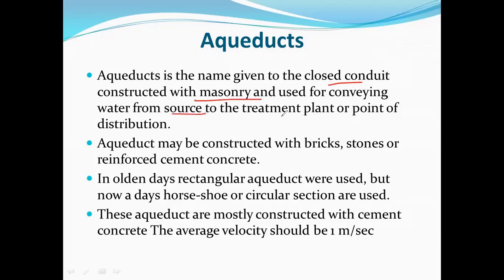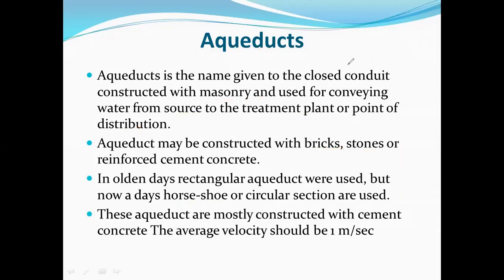This aqueduct may be constructed with bricks, stones or reinforced concrete. In olden days rectangular aqueducts were used, but nowadays aqueducts are mostly constructed in cement concrete, and the average velocity of flow should be one meter per second.